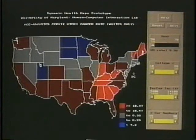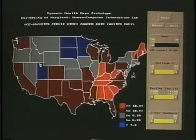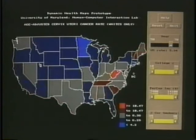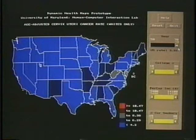Let's look at the prototype. Here, we have mapped cervix cancer mortality rates for white females. Bright red means high rates. Low rates are blue. On the side, a time slider lets me change the year for which data is displayed. When I slide from 1950 to 1970, I can clearly see that things are globally improving, reds being replaced by blues. In the case of cervix cancer, this is probably due to the increasing use of pap smears, which allows early detection and treatment.